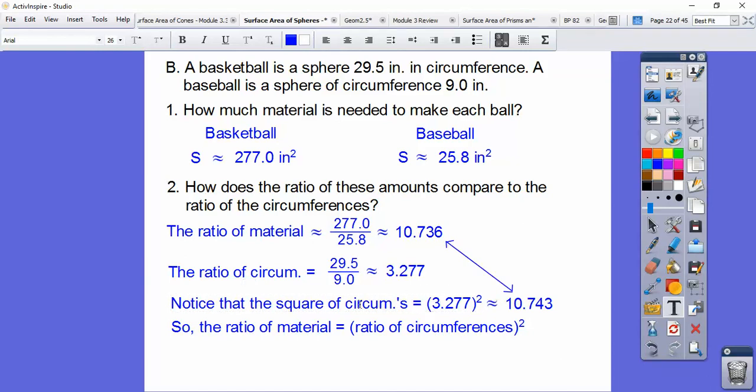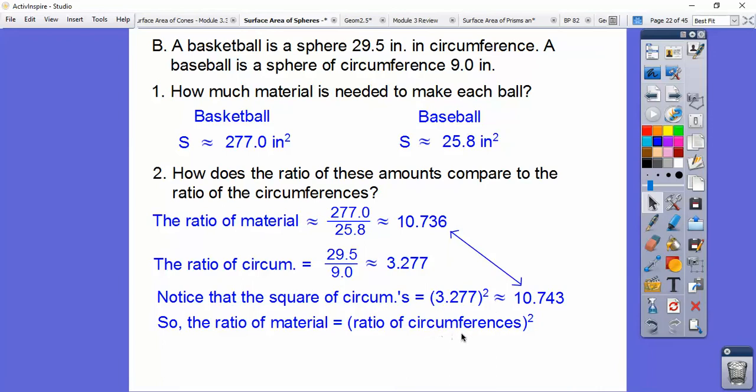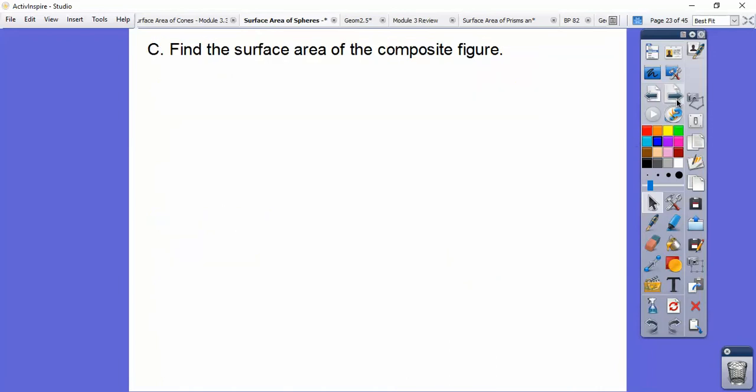This circumference is just 2πr, and this one's 4πr². So area is always square units, so circumference is not square units. It's linear units. So they wanted you to recognize it was being squared.